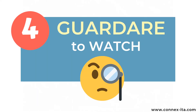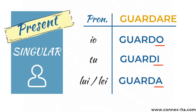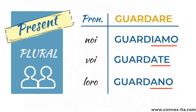Let's move to our fourth verb: GUARDARE, meaning to watch or to look at in English. The conjugation: io guardo, tu guardi, lui/lei guarda; noi guardiamo, voi guardate, loro guardano. Be careful with how you pronounce the sound GUA — you need to clearly say the U after the G and before the A. It's not 'gardare' but 'guardare'.